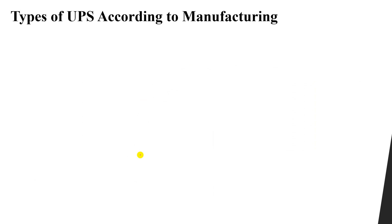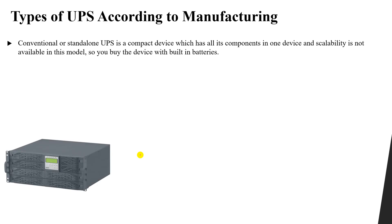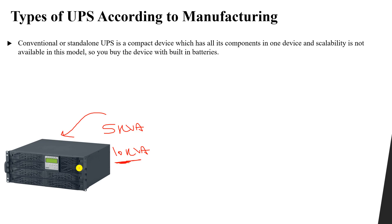In this lesson we will talk about the difference between the conventional UPS and the modular UPS. The conventional UPS, or stand-alone UPS, is a compact device where all components — such as batteries, inverter, and rectifiers — are contained in one compact unit. This device can be, for example, 5 kilo volt ampere or 10 kilo volt ampere — one big unit with a constant fixed rating. This type of UPS is not scalable, meaning its rating cannot be increased. The built-in batteries are inside it to store and provide electrical power when AC power is not available.